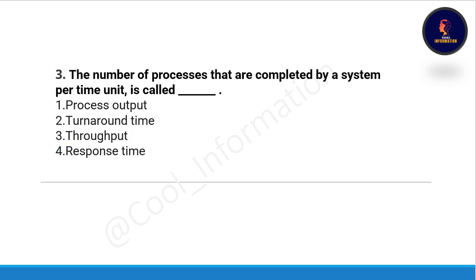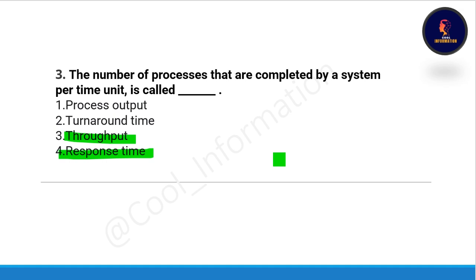Question number three: the number of processes that are completed by your system per unit time is called what? Option A: process output, option B: turnaround time, option C: throughput, option D: response time. The correct option is option number three, which is throughput.